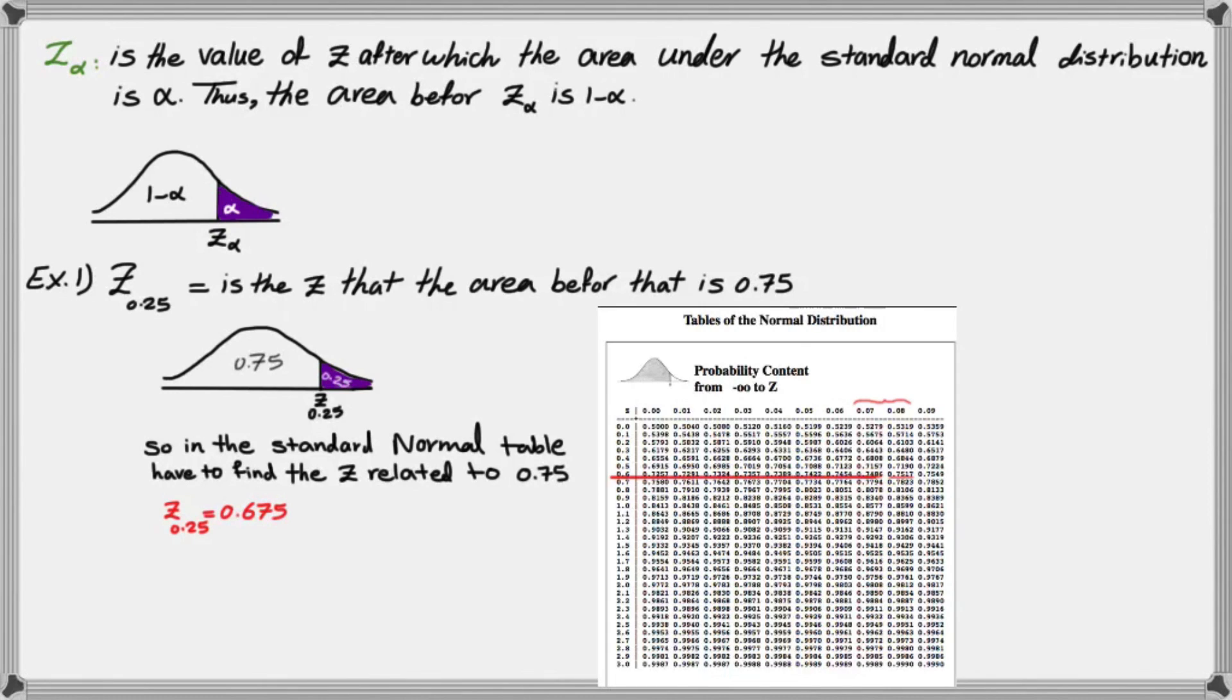You can actually find the exact interpolation of the value between these two numbers. But in this case, I just simply average the two numbers, and that is good enough for us as an approximation of Z of 0.25.